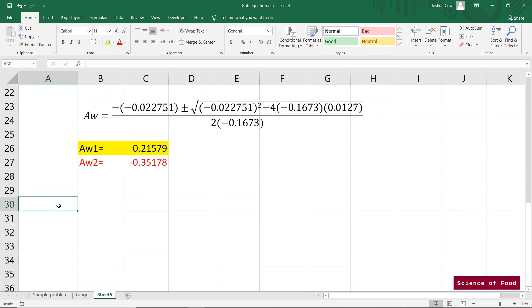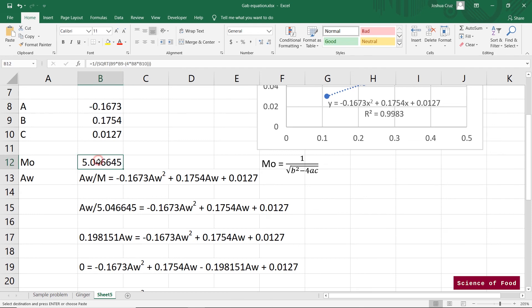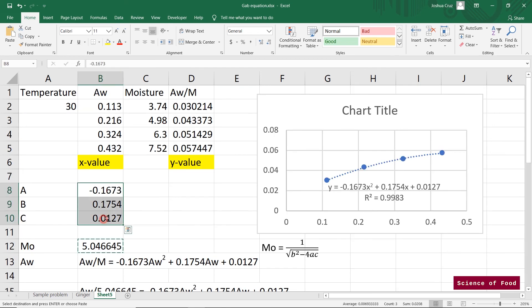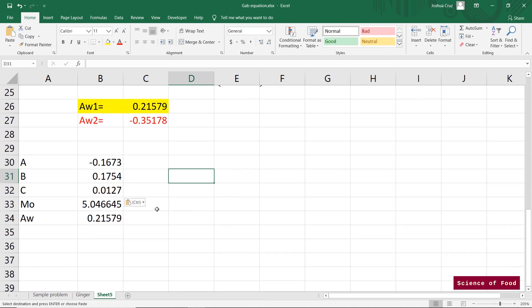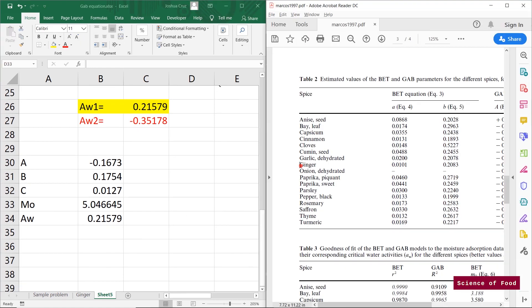So again, let's just summarize that. A, B, C, monolayer and water activity. So let's just copy this. Copy this. These three values. So let's just compare it with what the study got. Again, ginger.